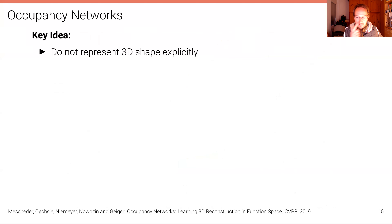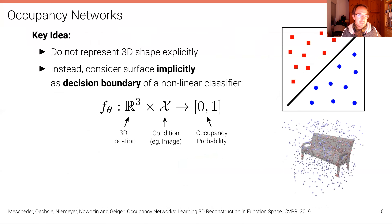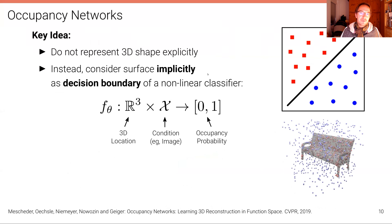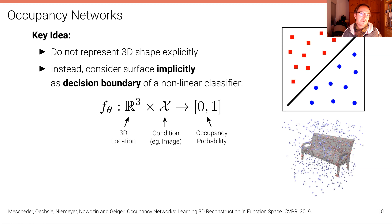So the key idea of our paper at CVPR 2019 was to not represent 3D shapes explicitly, but instead to consider the surface implicitly as the decision boundary of a nonlinear classifier. Implicit representations have been used before, but in the context of voxel grids representing an implicit surface through predicting, for example, a signed distance function on a voxel grid. Here, the representation itself is a neural network.